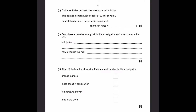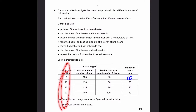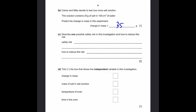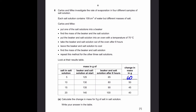Part B. Carlos and Mike decide to test one more salt solution containing 25 grams of salt in 100 cm³ of water. Predict the change in mass. We can see that 5, 10, 15, and 20 grams of salt are given, and the change in mass is progressively decreasing: 60, 50, 45, 40. So if the mass of salt increases again, the change in mass is going to decrease to 35, because the trend is minus 5 each time.